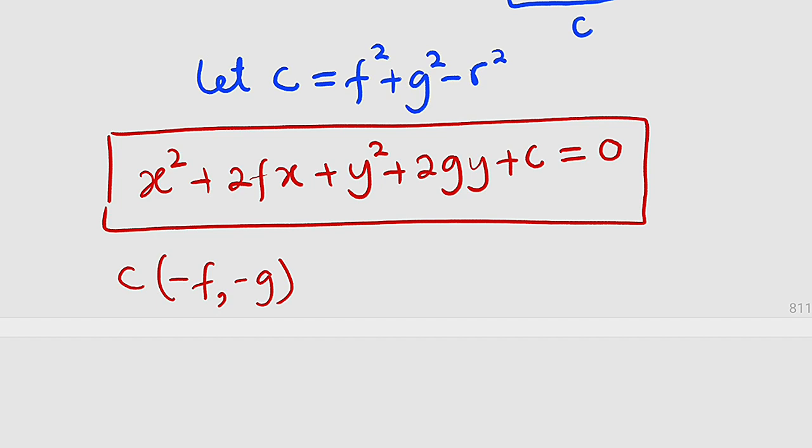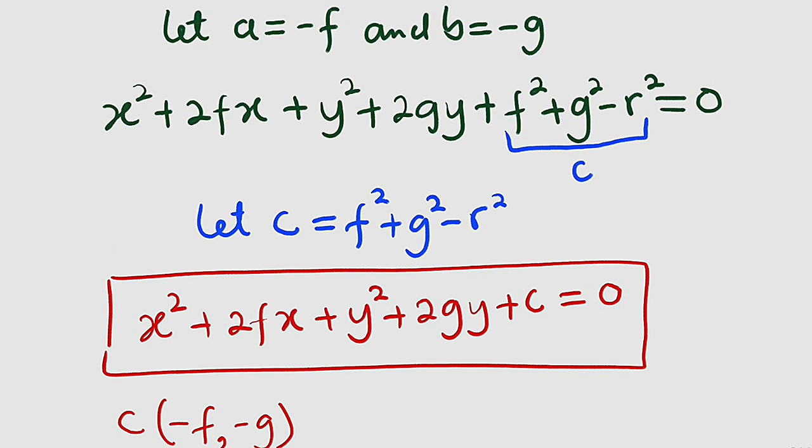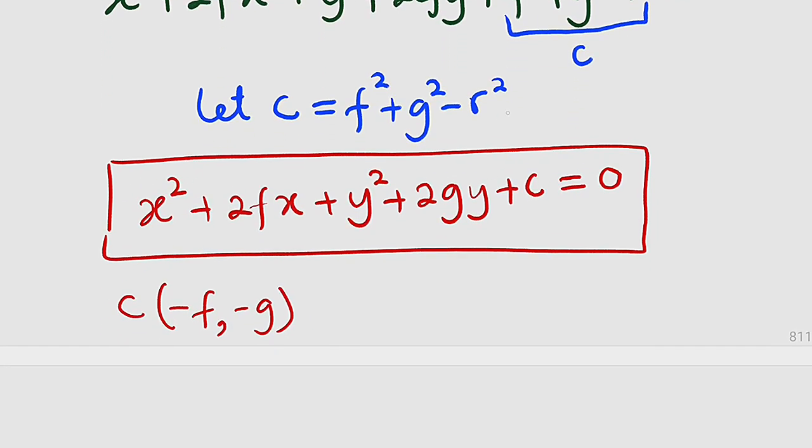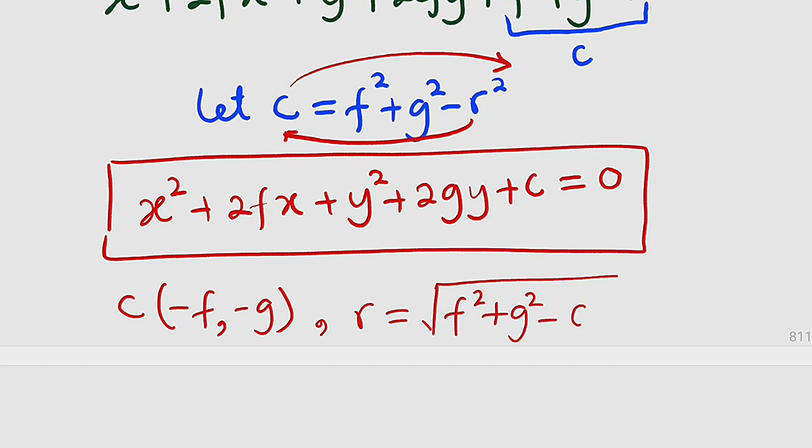So what about the radius? The radius can be obtained from this equation. Look at it here. So by just making r the subject for that equation. If we take r squared backward and take c to the other side their signs will switch. Therefore r which is the radius is equal to the square root of f squared plus g squared minus c.